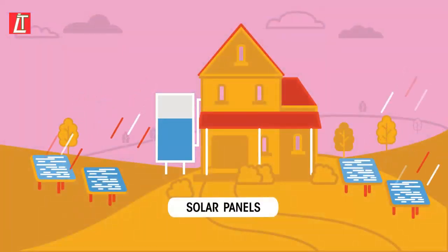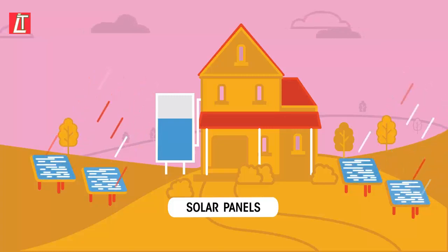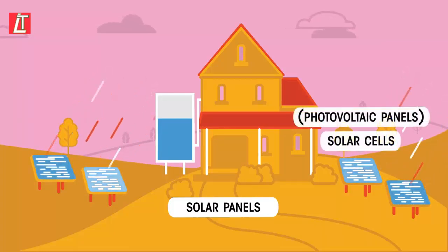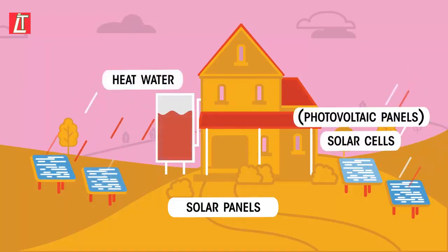The earth gets energy transferred by heat and light from the sun all the time. The sun's energy can either be used to generate electricity to use in our homes with the help of solar cells, photovoltaic panels, or used to heat water for our homes using solar panels.